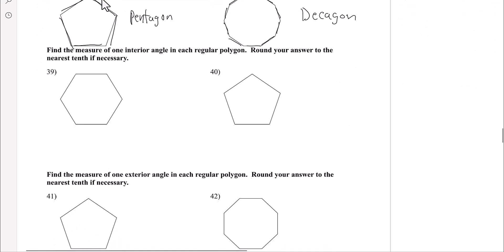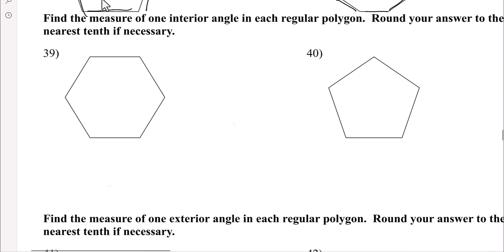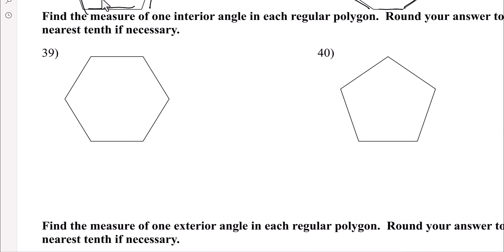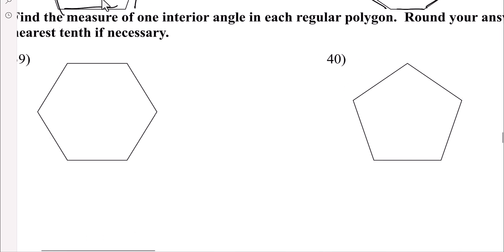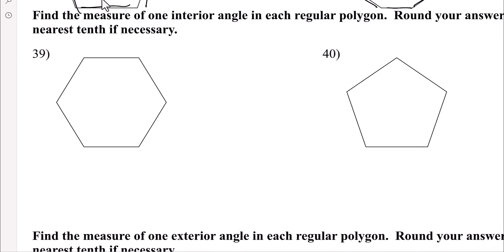All right. So, now, if you wanted to find the interior angle, here's an easy way to do it. Take 180 degrees, multiply that by the number of sides there are, subtract two. So, in this case,